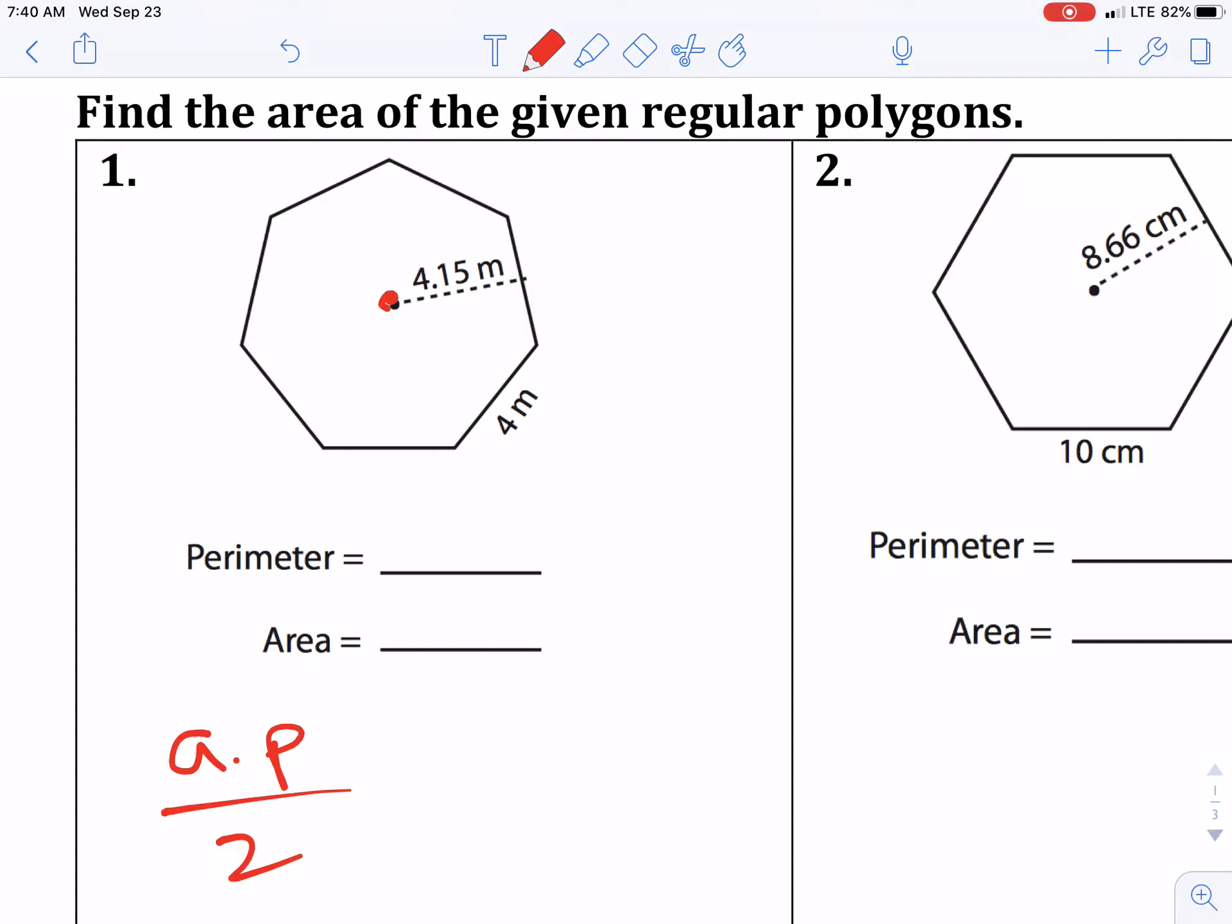The apothem goes from the center straight down to the side, so that is 4.15. The perimeter, well there's seven sides that are the same, so seven times the four is 28, so we're going to do the perimeter is 28 meters.